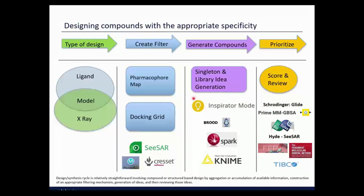There are tools that can help serve this process of de novo design, and this is an area where additional innovation is needed. Even after the generation of ideas, you need to score, review, and prioritize them. There are various tools depending on throughput — from Glide docking, MMGBSA, HYDE scoring, and Seesaw, to more computationally expensive methods such as FEP+ calculations or FMO-type approaches to predict affinity — and viewing all that through Spotfire.